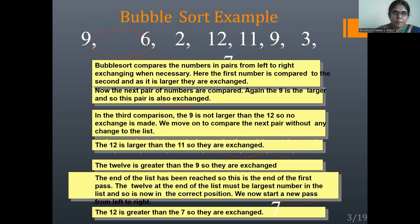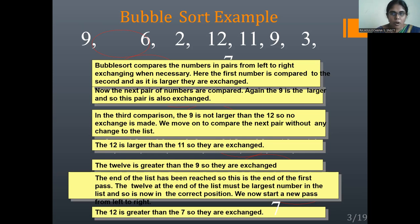Now look at the example: 9, 6, 2, 12, 11, 9, 3, 7. Here, compare 9 with 6. Since 9 is larger, 9 is swapped with 6. In the next comparison, 9 is compared with 2. Again, 9 will be swapped because 9 is greater than 2. Then in the third comparison, 9 is compared with 12. But 9 is not greater than 12, so it will not be swapped.